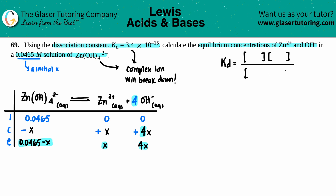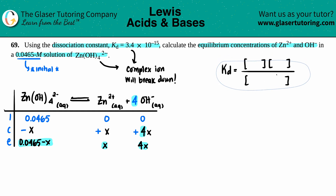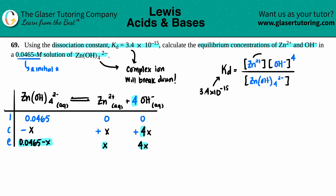Setting up the K expression: on the top we have Zn²⁺ times OH⁻ raised to the fourth power because of the coefficient of 4, and on the bottom we have Zn(OH)₄²⁻. Plugging in: Kd equals 3.4 times 10 to the negative 15th; zinc is x; hydroxide is 4x raised to the fourth; and the denominator is 0.0465 minus x.